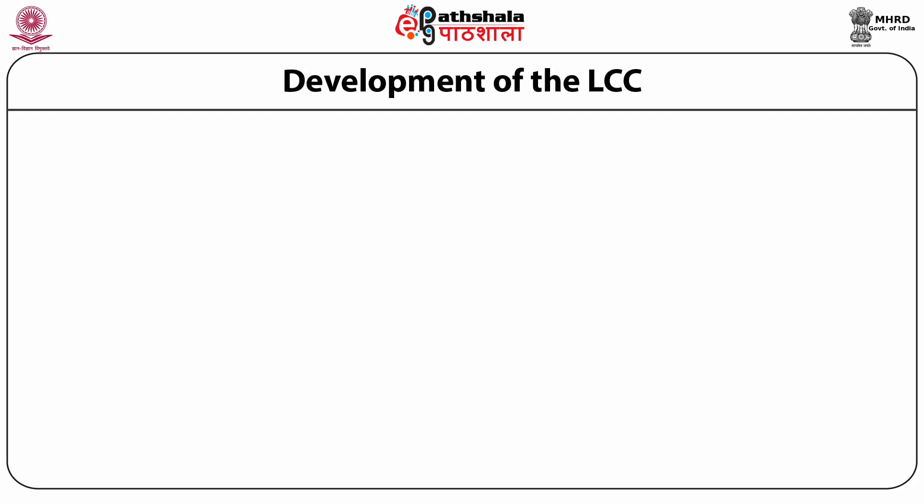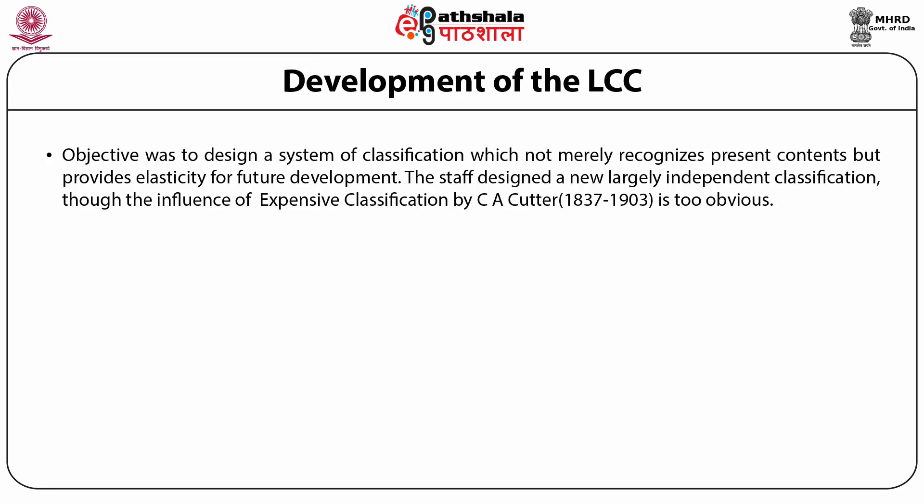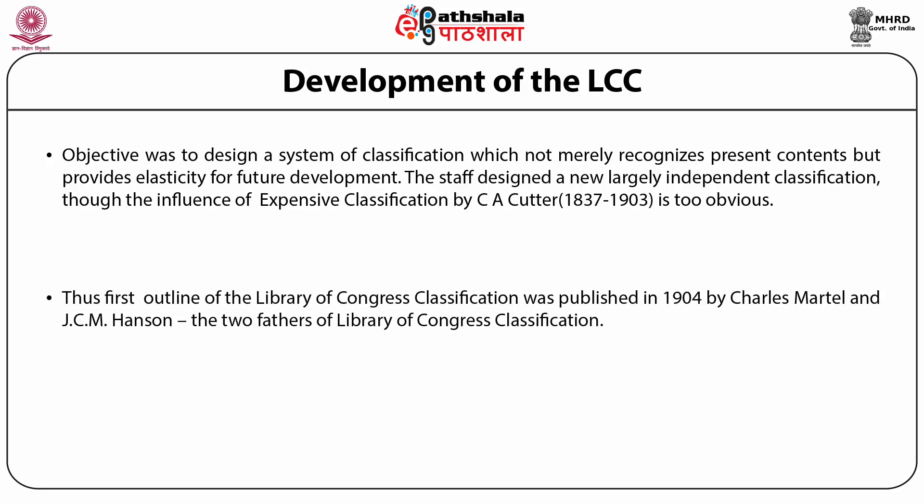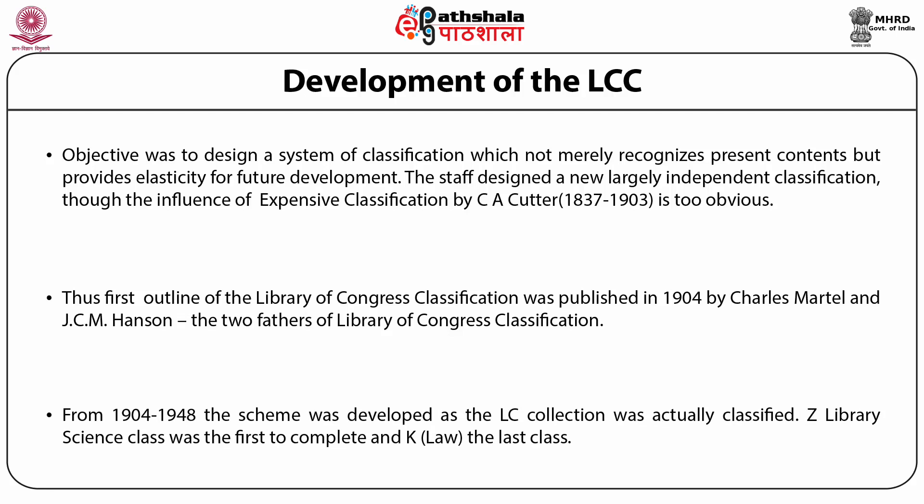Development of the Library of Congress: The objective was to design a system of classification which not merely recognizes present content but provides elasticity or hospitality for future development. The staff designed a new largely independent classification, though the influence of expansive classification by C.A. Cutter is too obvious. Thus, the first outline of the Library of Congress classification was published in the year 1904 by Charles Martel and J.C.M. Hanson, the two fathers of Library of Congress classification. From 1904 to 1948, the scheme was developed as the Library of Congress collection was actually classified. The Z Library Science class was the first to complete and K Law the last class to be completed.